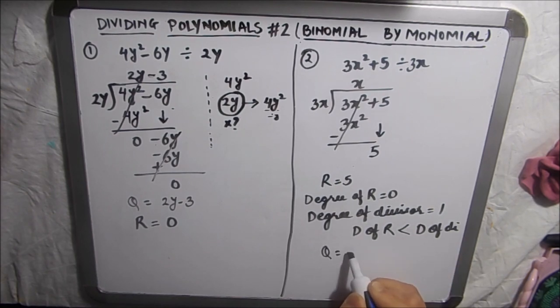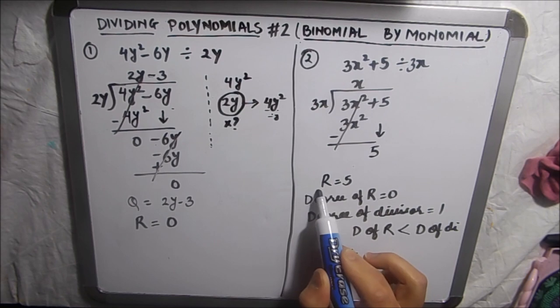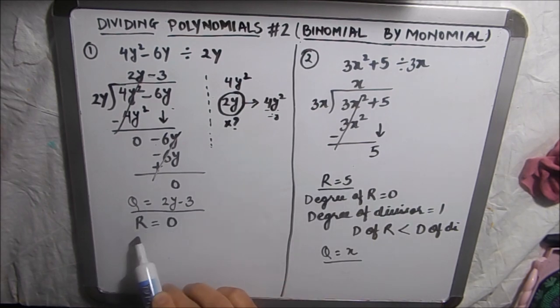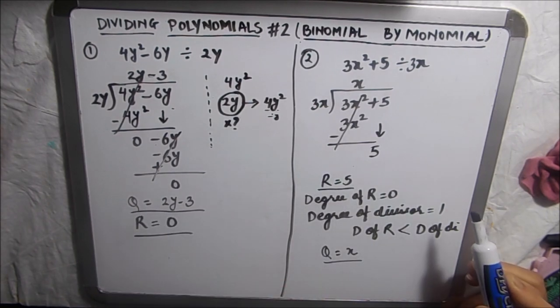Quotient here is x. So this is how we divide binomials by monomial.